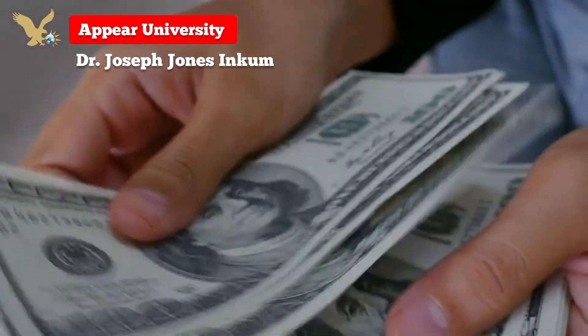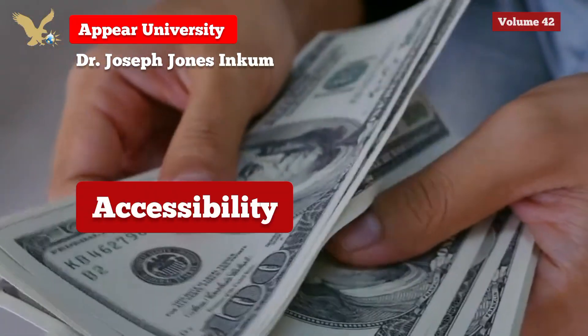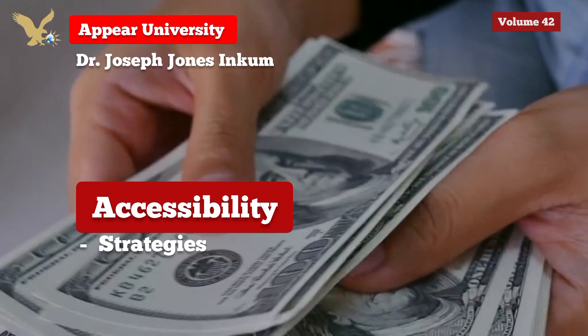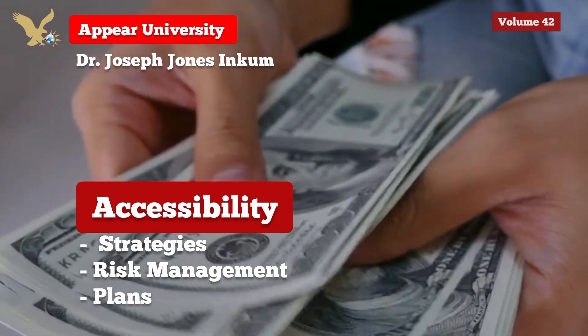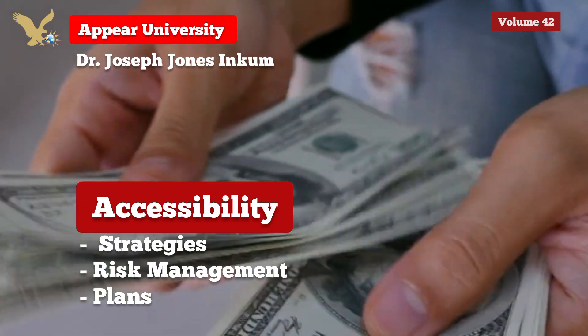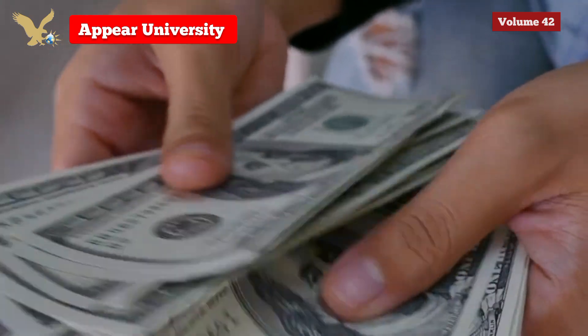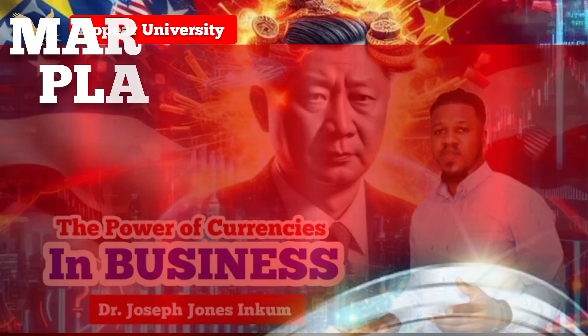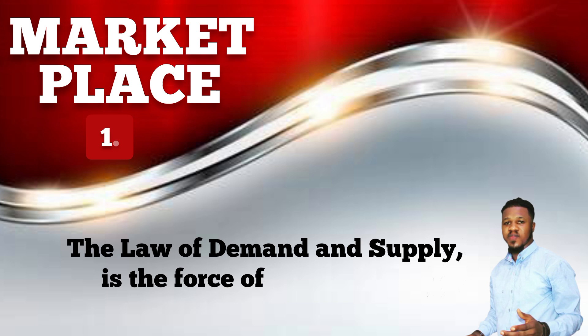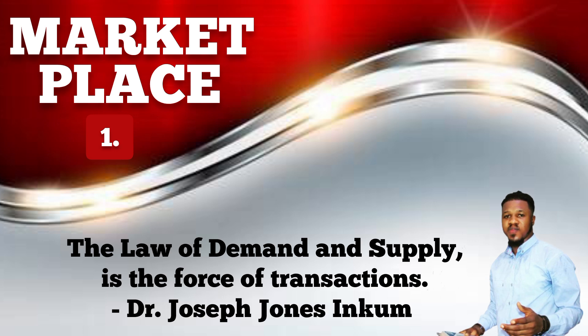With the power of currencies in business, you first need to know about these five steps. Number one is the accessibility of the market — what type of marketplace you have to find yourself in. Number two, you have to know the demand of your product, because the law of demand and supply moves with the transaction that will take place.